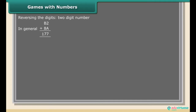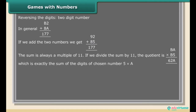Games with numbers — reversing the digits of a 2-digit number. If we add a two-digit number and its reverse, for example 92 + 85 = 177, the sum is always a multiple of 11.